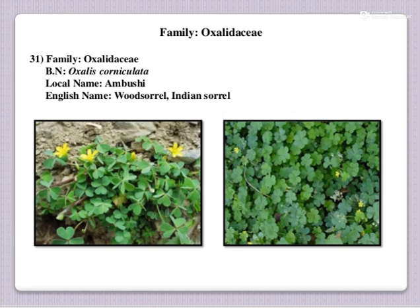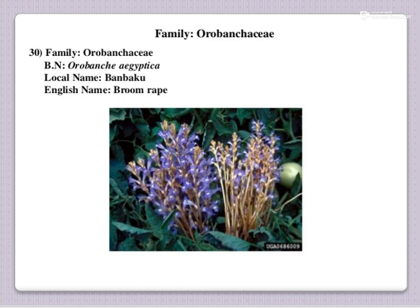Then Ambushi — local name is Ambushi. English name is wood sorrel or Indian sorrel. Botanical name is Oxalis corniculata, family Oxalidaceae. These weeds mostly occur in the rainy season. Then next one is Orobanchi. Local name is Bamku, English name broom rape, botanical name is Orobanche aegyptiaca, family Orobanchaceae. This is a parasitic weed, mostly occurring on Striga.